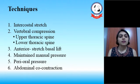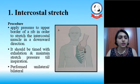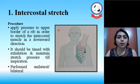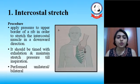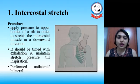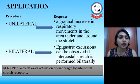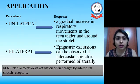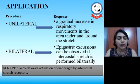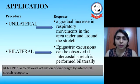The first technique is intercostal stretch. The procedure is to apply pressure to the upper border of the rib in order to stretch the intercostal muscle in a downward direction. It should be timed with exhalation and maintain stretch pressure till inspiration. This can be performed unilaterally as well as bilaterally. If given unilaterally, we may get a gradual increase in respiratory movement in the area under and around the stretch. If given bilaterally, we may find epigastric excursion in the epigastric area.